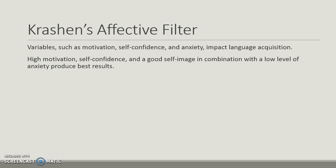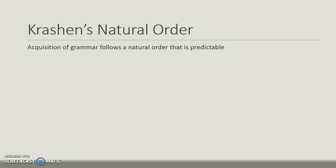Krashen also introduced the affective filter. Variables such as motivation, self-confidence, and anxiety all impact language acquisition. We want students with high motivation, high self-confidence, and a good self-image in combination with a low level of anxiety to produce the best results. So when thinking about your language classroom, consider the language learner's affective filter. Krashen also agreed with Dulay and Burt on the idea that the acquisition of grammar follows a natural order that is predictable.